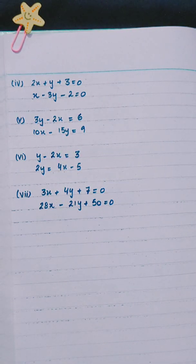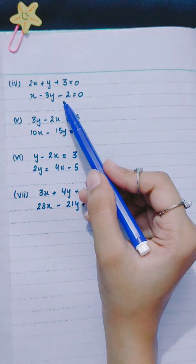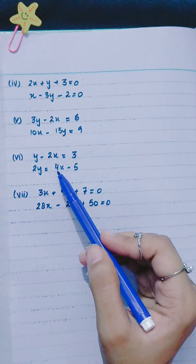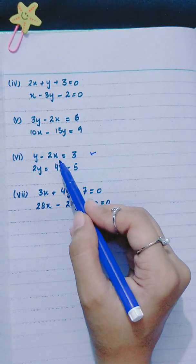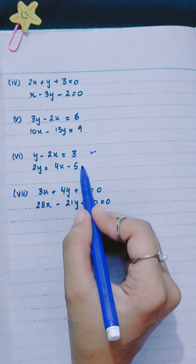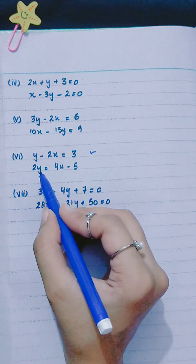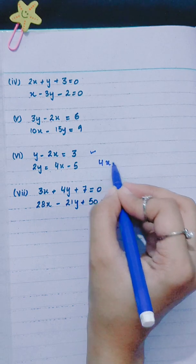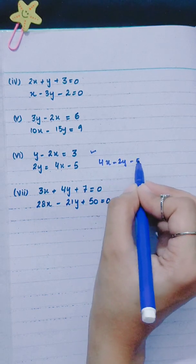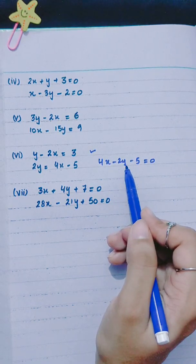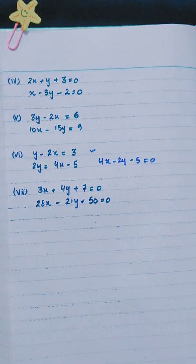Now you can solve the remaining questions using the same method. In part 4 and part 5, we have x and y on both sides. In part 6, x and y are on one side, but in the other equation, y is on the left side alone, so you will shift it to get 4x minus 2y minus 5 equals to 0, then apply the formula. Try these questions.